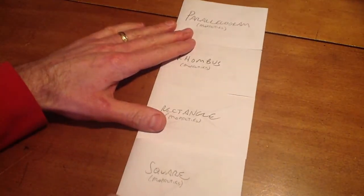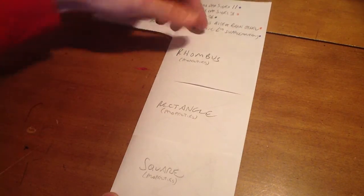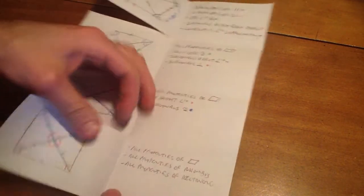When you're done, you end up with a little study sheet that looks like this. And this is a great little study guide to help you with the properties of the parallelogram, the rhombus, the rectangle, and the square.